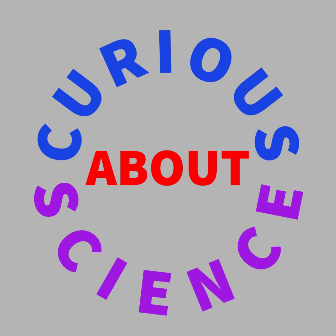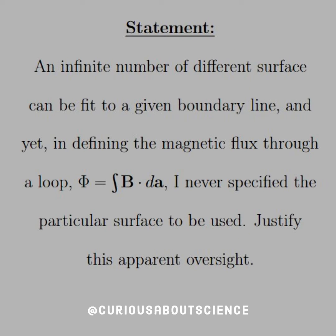Let's step into the world where we talked about the field theory part of things and get our brains working again abstractly. Our statement today reads: an infinite number of different surfaces can be fit to a given boundary line. And yet, in defining the magnetic flux through a loop — phi equal to integral B dot dA — I never specified the particular surface to be used. Justify the apparent oversight.